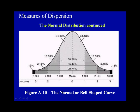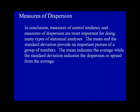In conclusion, measures of central tendency and measures of dispersion are most important for doing many types of statistical analyses. The mean and the standard deviation provide an important picture of a group of numbers. The mean indicates the average, while the standard deviation indicates the dispersion or spread from the average.